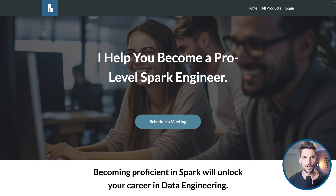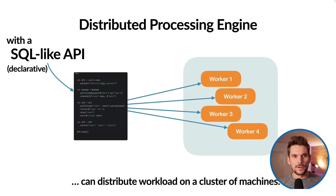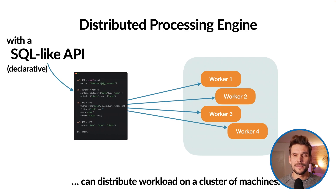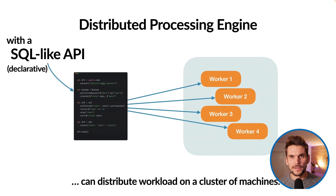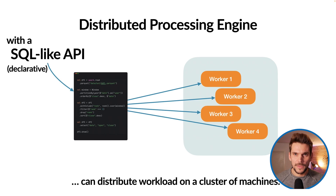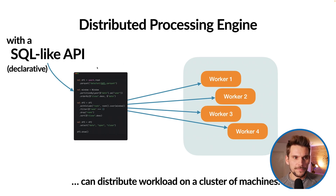Spark is basically a distributed processing engine. It is able to distribute our workload among an entire cluster of machines — there may be one, two, three, ten, dozens, or even hundreds of machines — which can work together to execute the workload we specify in our program.